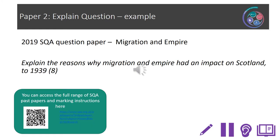Here is an example Explain question from the 2019 SQA paper on Migration and Empire: 'Explain the reasons why migration and empire had an impact on Scotland to 1939.' If you don't complete the Migration and Empire section, you can access other Explain questions through the SQA past papers using the QR code on screen. You can pause the recording to complete an Explain question of your choosing under timed conditions — this question should take about 20 minutes. Use the SQA marking instructions to correct your work.